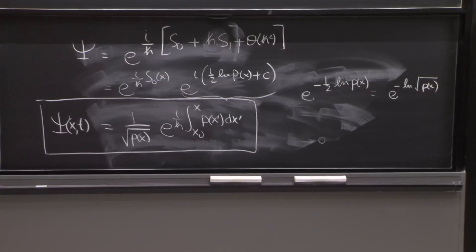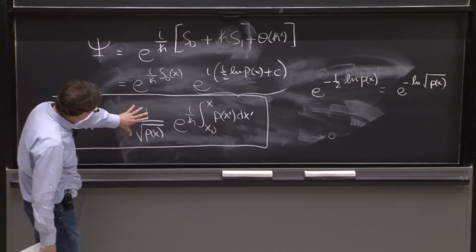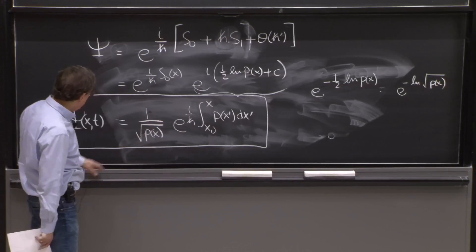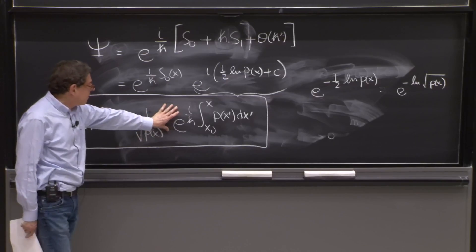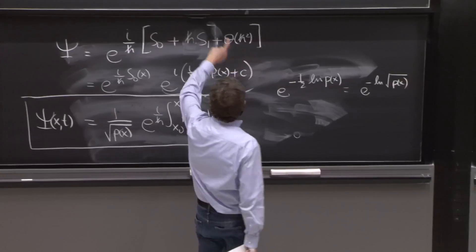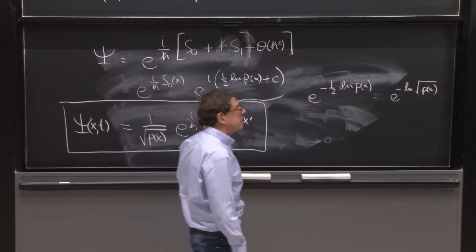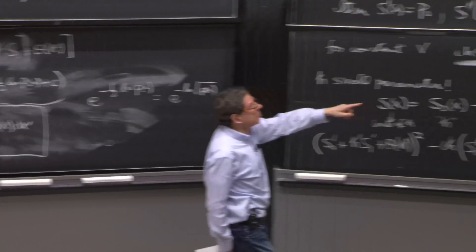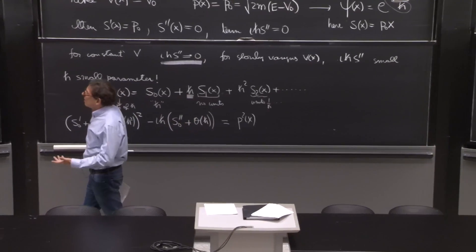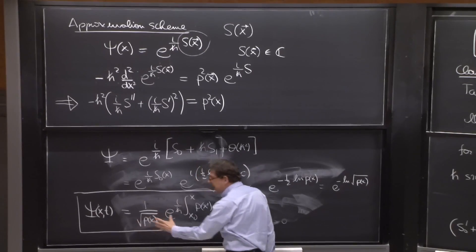So as promised, this is of the form of a scale factor here, a rho, square root of rho, times a phase. So we did begin with a pure, what looked like a pure phase. But then we said s of x is complex. In fact, s0 was real, but s1 was imaginary. With s1 imaginary, the role of s1 was to provide the magnitude.